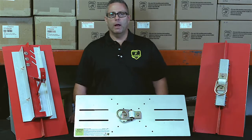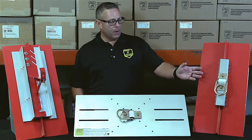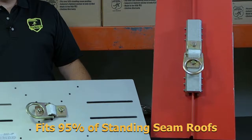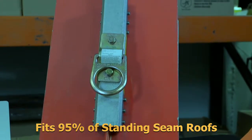In the Standing Seam Roof Anchor product line, we have the main product, which is the SSRA1. This is the industry's lightest at only four and a half pounds and most universal fits.